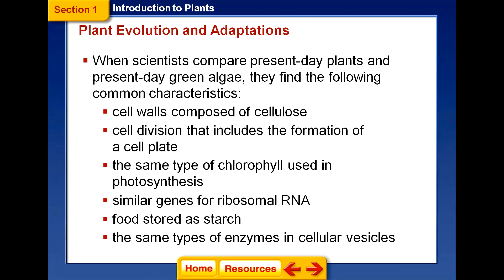The six shared characteristics are: first, cell wall composition — all have cell walls made of cellulose. Second, formation of a cell plate during cell division. Third, the same type of chlorophyll that gives them the green color and helps them perform photosynthesis. Fourth, ribosomal RNA genes are similar. Fifth, both store food in the form of starch.